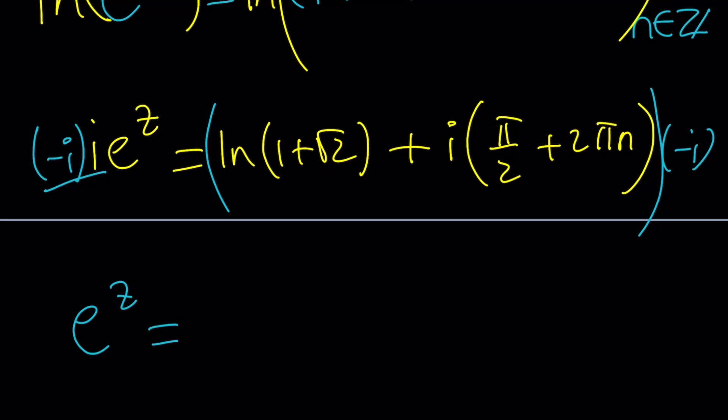This is going to become negative i something. But again, I'm going to get a negative i squared, which is positive 1. So let's go ahead and write that first, that pi thingy. And then we're going to get minus i times ln 1 plus root 2. Awesome.